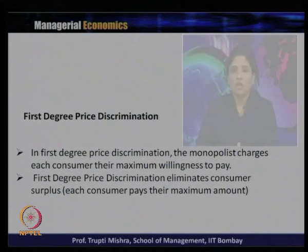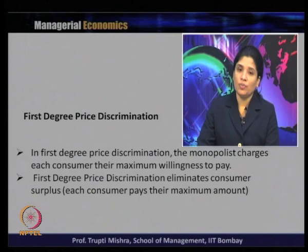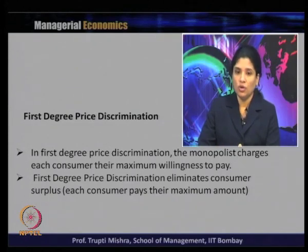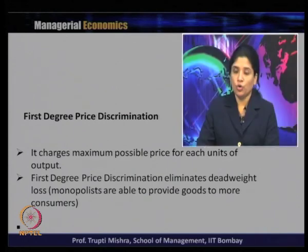In first degree price discrimination, the monopolist charges each consumer their maximum willingness to pay. Whatever they are willing to pay, the monopolist generally charges that maximum price. First degree price discrimination eliminates consumer surplus because each consumer pays the maximum amount they are willing to pay, and it also charges the maximum possible price for each unit of output. It generally eliminates dead weight loss because monopolists are able to provide more goods to consumers.